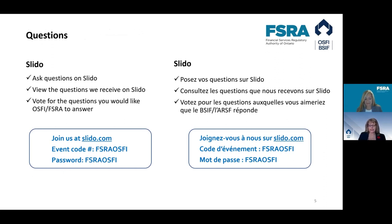We want this to be an interactive session. We'll ask that you submit questions via the application called Slido. To access Slido, please open another browser on your computer or mobile device and go to Slido.com. Where asked, please enter the event code FISRA OSFI — F-S-R-A-O-S-F-I — and the passcode is the same. Once logged in, you can submit your questions and also vote for the questions you'd like us to answer.